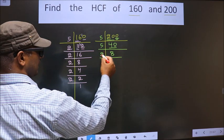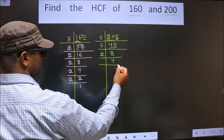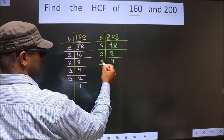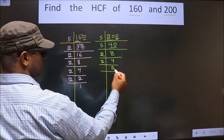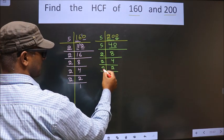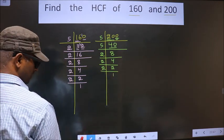Now 8 is 2 times 4. 4 is 2 times 2. Now 2 is a prime number, so we take 2 times 1 is 2.